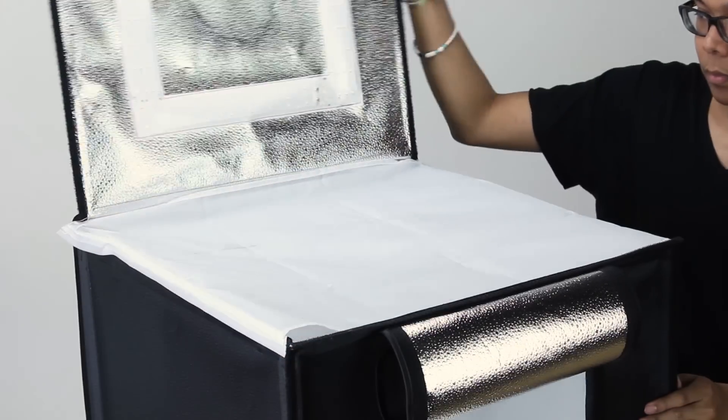An included diffusion panel will help you further diffuse the light. Just open the top of the light tent, attach the panel to the tent's left and right sides, and close the top.